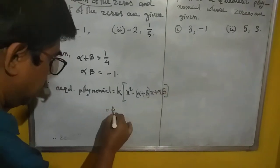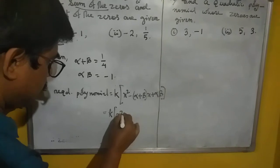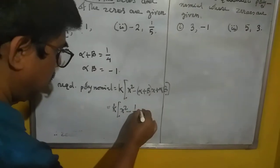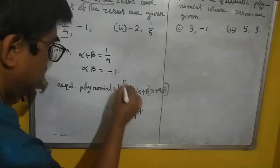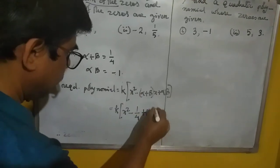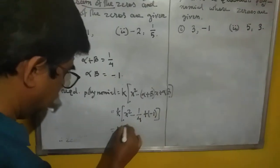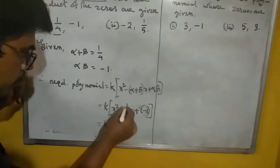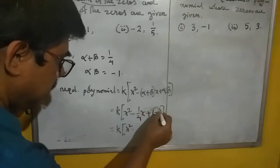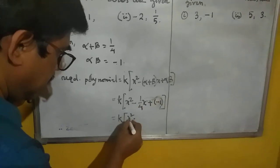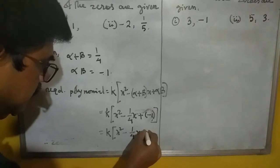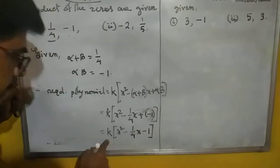So here k x square minus alpha plus beta already given, 1 by 4, plus that is minus 1. So ultimately k 1 by 4x plus minus 1. So this is k x square minus 1 by 4x minus 1. And k you have to write,